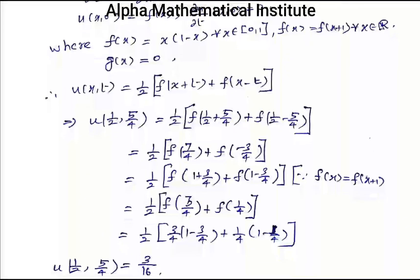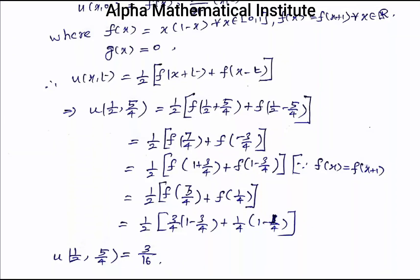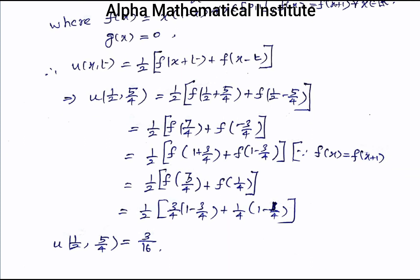Therefore the solution to this problem is u(x, t) = (1/2)[f(x + t) + f(x − t)], since c = 1. The integral term vanishes because g(x) = 0. So the solution is u(x, t) = (1/2)[f(x + t) + f(x − t)].